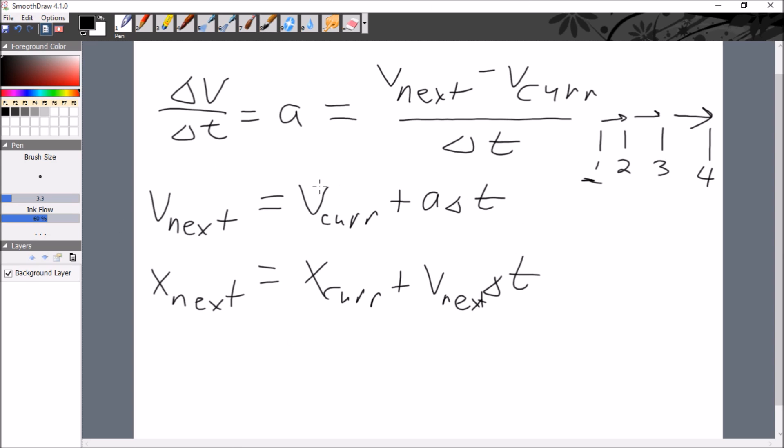So this is sort of an informal way of writing it. The more formal way we write this is that velocity at point i+1 is velocity at point i plus a times delta t, and then the position at i+1 equals the position at i plus velocity. Since we're going with velocity next, that's going to be i+1 times delta t.